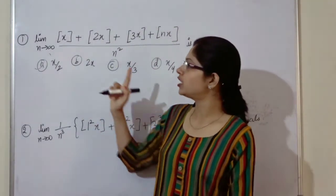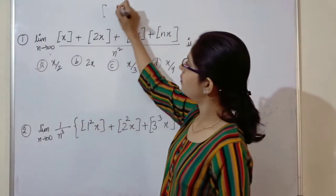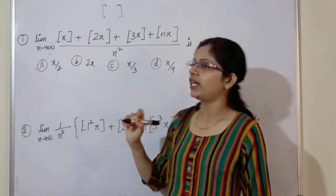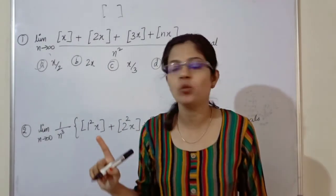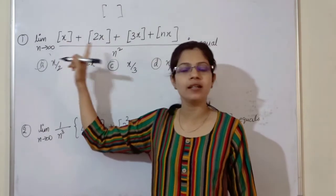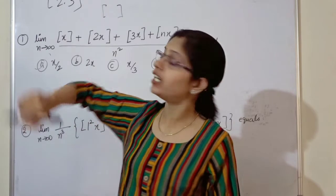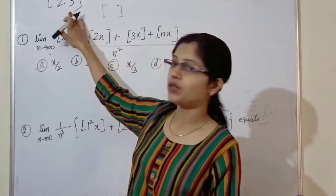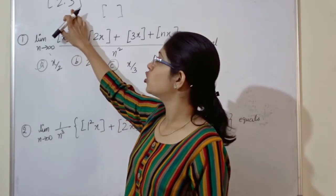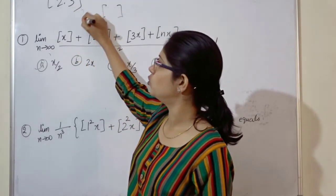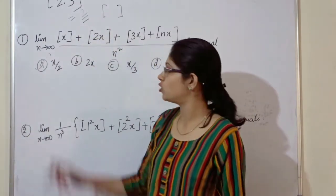My first question: you have to find the limit as n approaches to infinity. This is nothing but the greatest integer function, whose value is less than or equal to this value. For example, take 2.3 — 2.3 is not an integer, so the greatest integer less than or equal to 2.3 is 2.